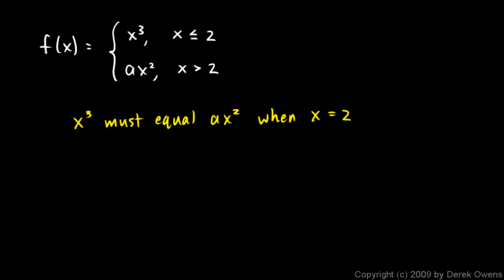So another way of saying that is saying that 2 cubed has to equal a times 2 squared. So that's pretty easy. 8 has to equal a times 4. So a has to equal 2. And that's your answer.